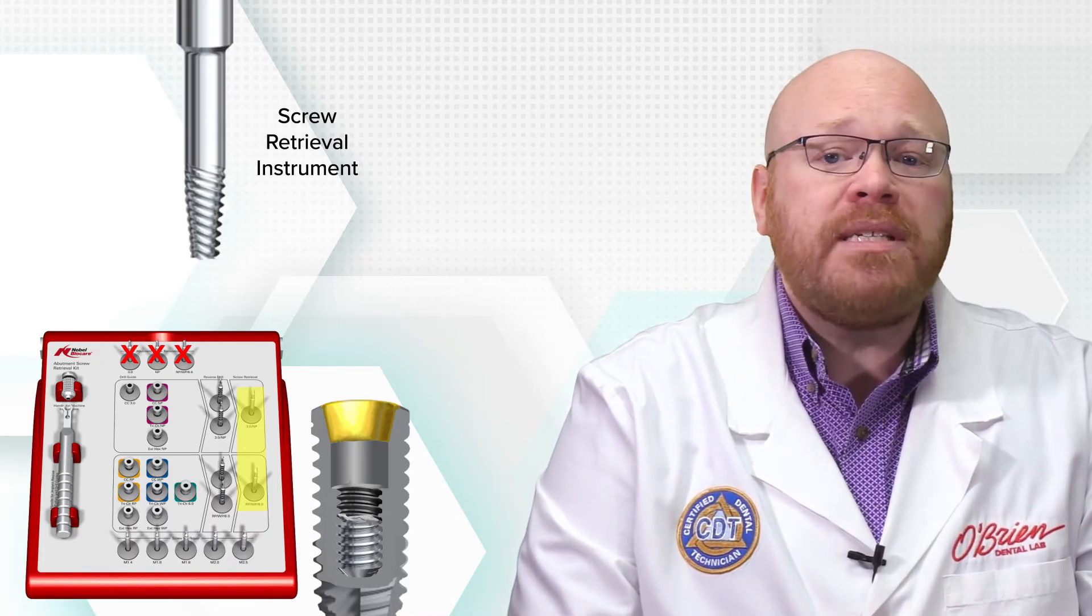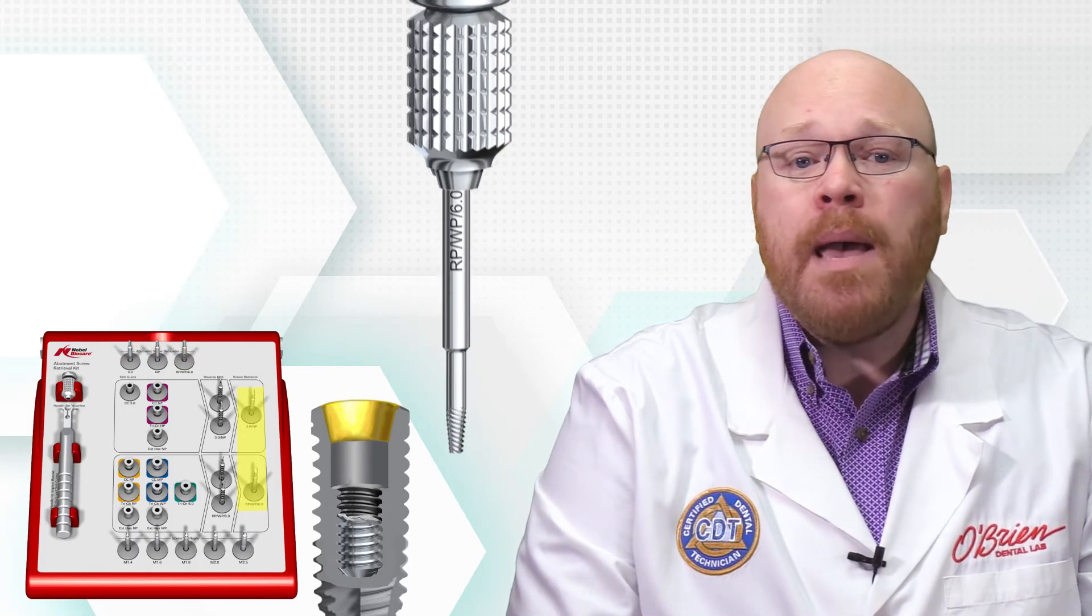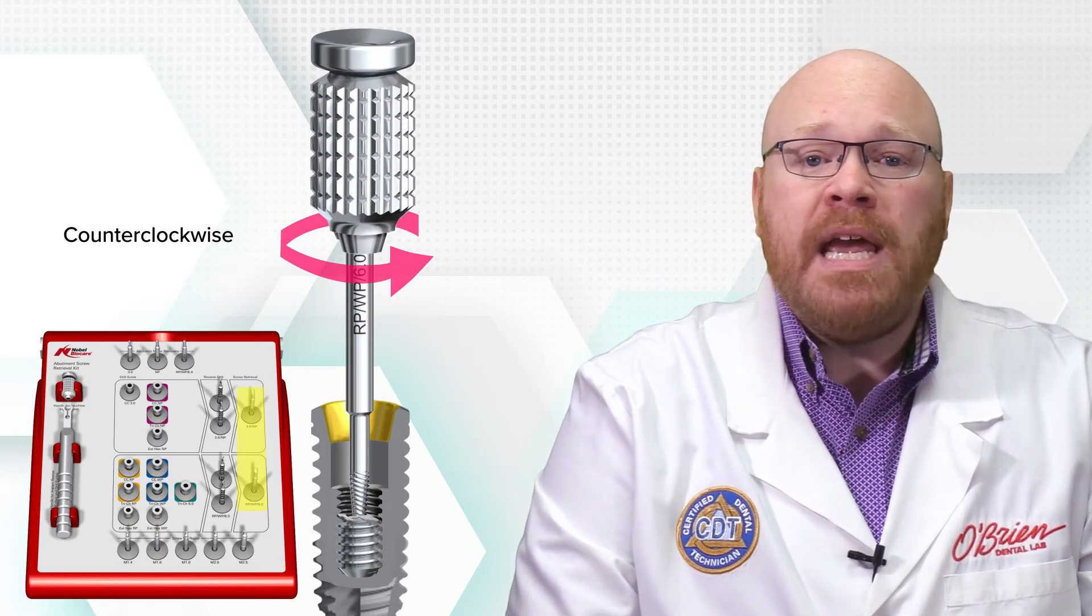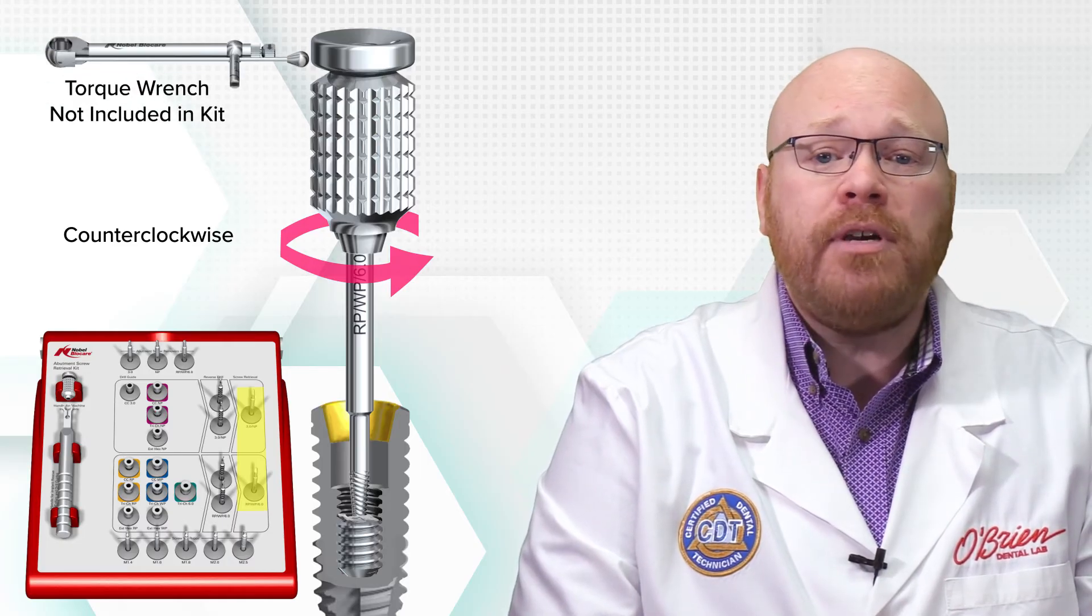Choose the appropriate size and attach the screw retrieval tool to the short handle. Place the tool into the previously drilled hole and rotate it counterclockwise with light pressure. If the screw still won't rotate, you can attach the retrieval tool to a torque driver and try again.